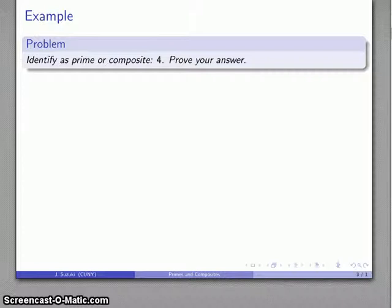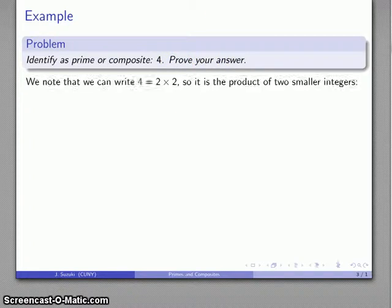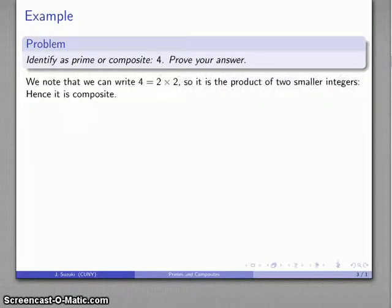For example, let's try to identify as prime or composite the number 4, and we'll actually want to try and prove our answer. If it turns out that 4 is composite, since I could write 4 as 2 times 2, I can write 4 as the product of two smaller integers, which is all I need to satisfy the definition of what it means for a number to be composite.